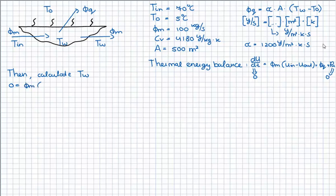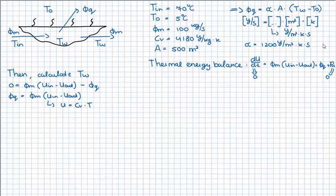Filling this in, watch out: since the heat flux is going from the inside of the bath to the outside, you have to use a minus sign. Then Vq equals Vm times delta U, and the internal energy is equal to the heat capacity times the temperature. Filling in the equation for Vq on the left side and heat capacity times temperature for internal energy on the right side, we get the following equation.